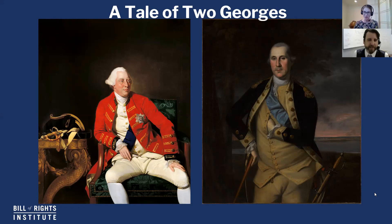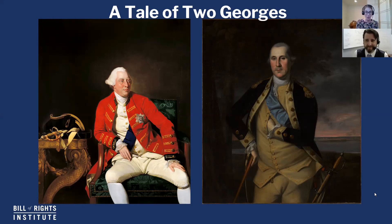One is remembered as the King who went mad — he had a condition that was interpreted as madness, but that's really not what it was — and the other is revered as the father of our country. They were both family men, both somewhat self-conscious about their learning; George III didn't learn to read until he was almost 11. They had small things in common, but their roles on the world stage took them down very different paths. Their role on the world stage kind of took them down different paths — it's fun to see them side by side, and one wonders what would have happened had they met.